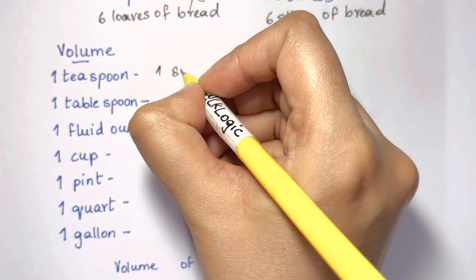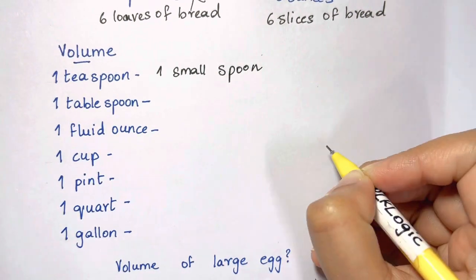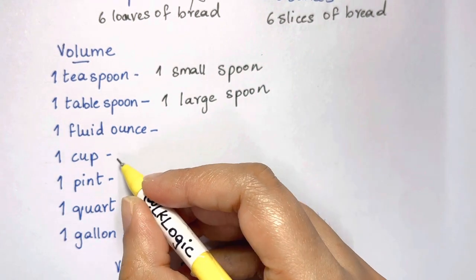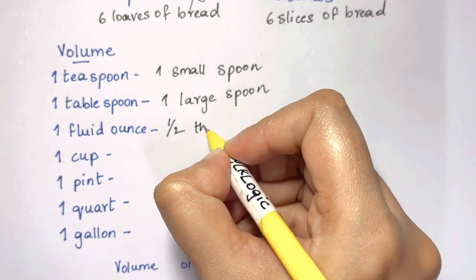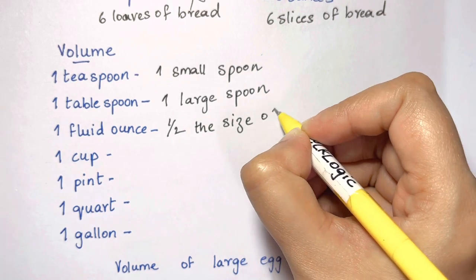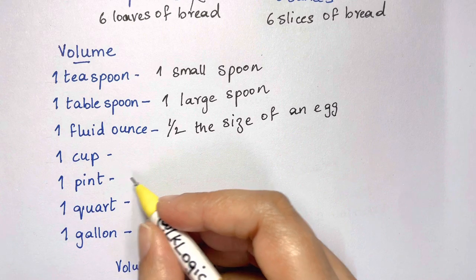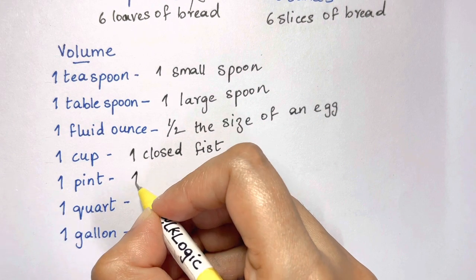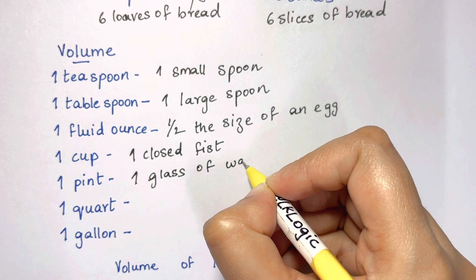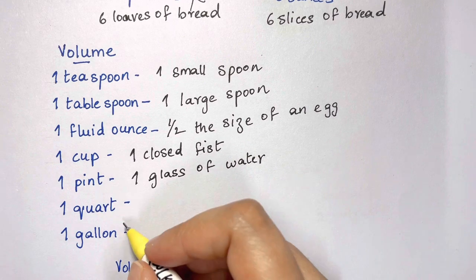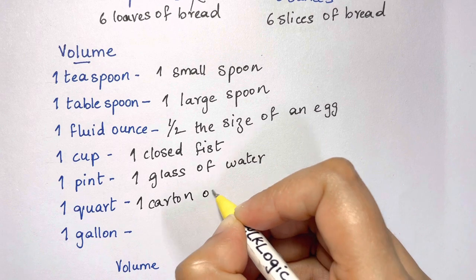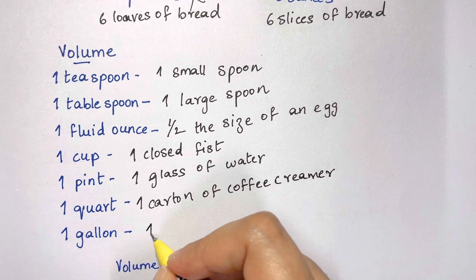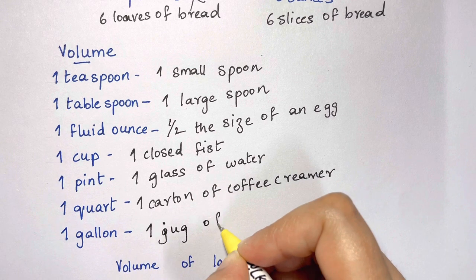Now let's look at volume estimates. One teaspoon is about one small spoon, one tablespoon is one large spoon, and one fluid ounce is about half the size of an egg. One cup is about one closed fist, one pint is about one glass of water, one quart is one carton of coffee creamer, and one gallon is about one jug of milk.